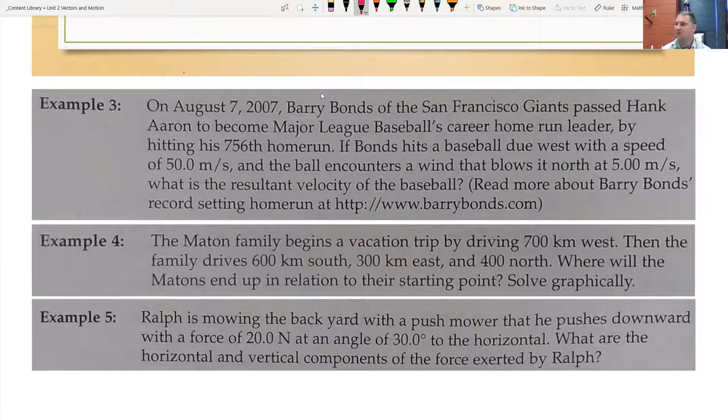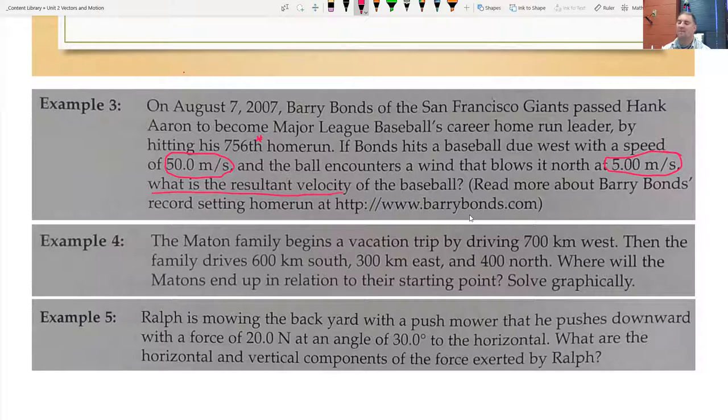So on August 7th 2007, Barry Bonds of the San Francisco Giants passed Hank Aaron to become Major League Baseball's career home run leader by hitting his 756 home run. So if Bonds hits a baseball due west with a speed of 50 meters per second, and the ball encounters a wind that blows it north at 5 meters per second, what is the resultant velocity of the baseball?